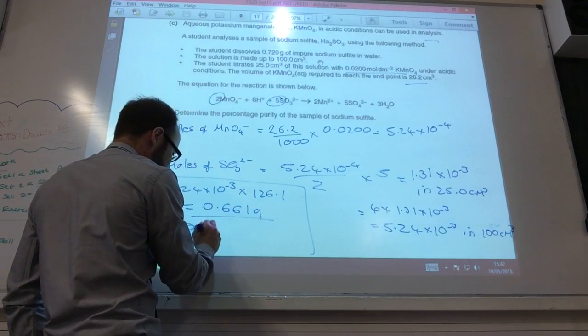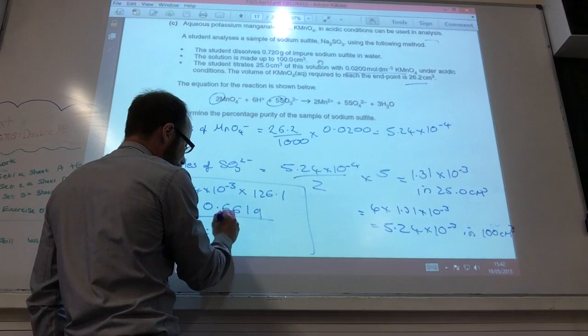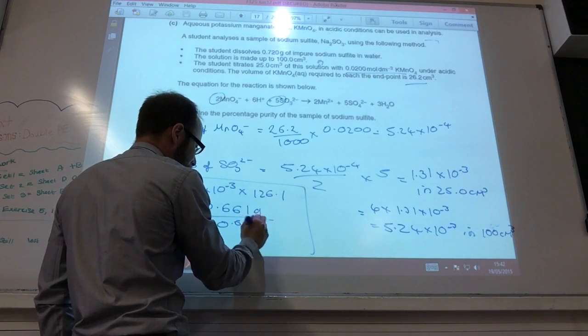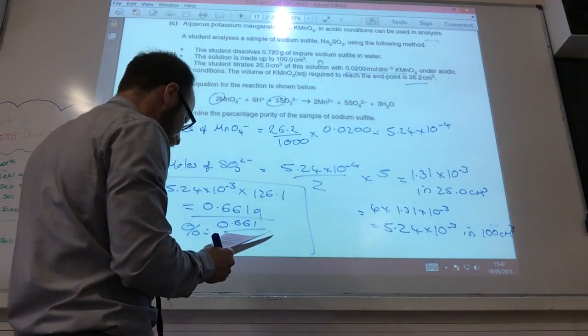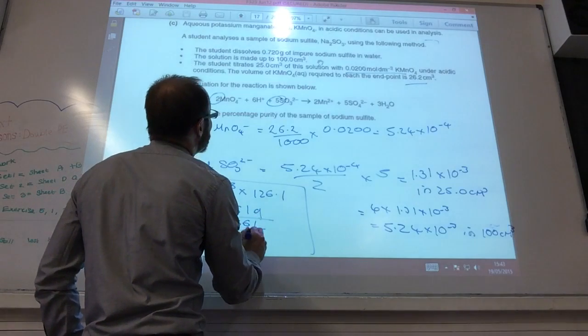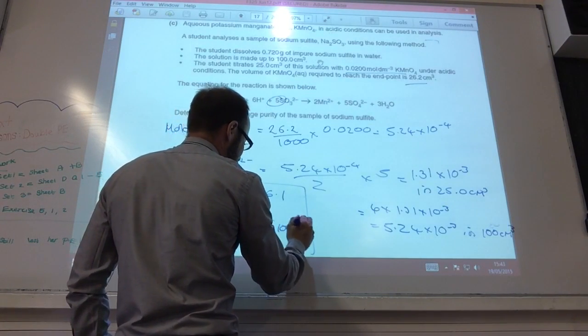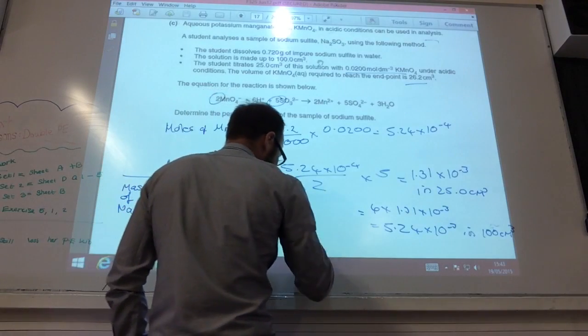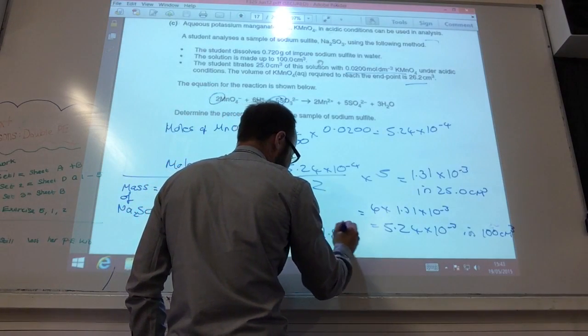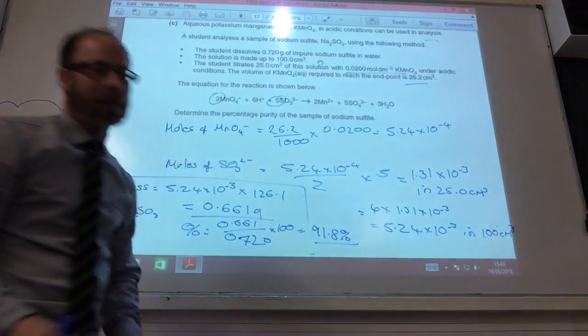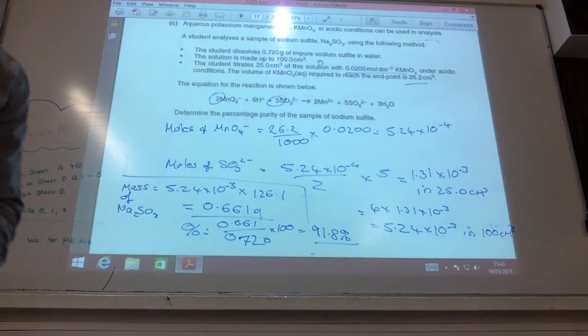And therefore your percentage purity is 0.661 over the original sample of 0.272 times 100, which comes to 91.8%. And that's it for this paper.